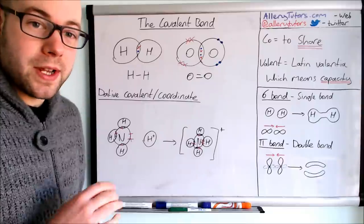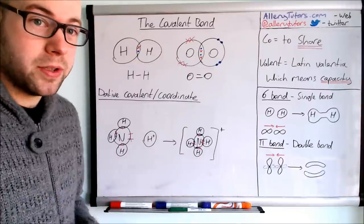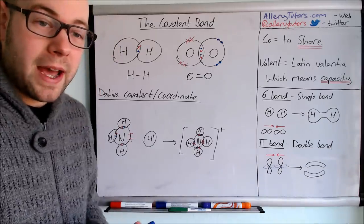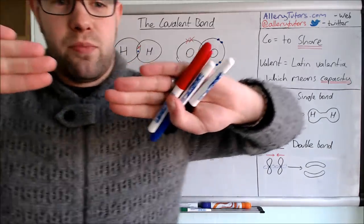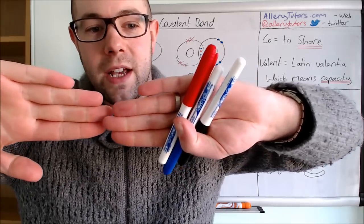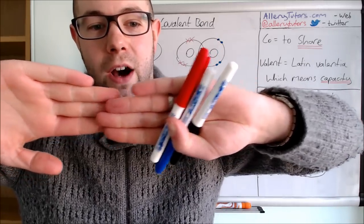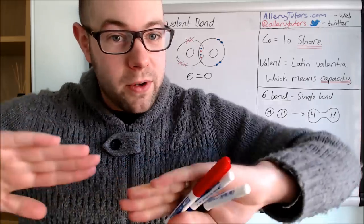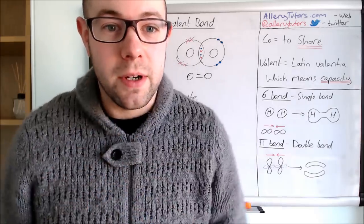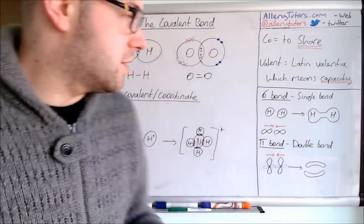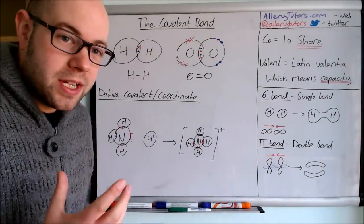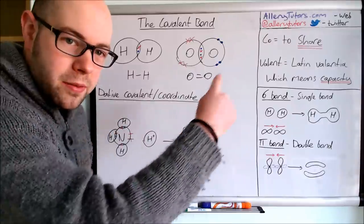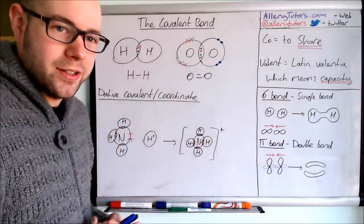That applies to s orbitals, but if we have p orbitals, a sigma bond is where two p orbitals come head to head — they approach and squash together, and that overlap is the actual bond formed. When p orbitals overlap head to head, we call that a sigma bond. Each orbital has an electron, they overlap and share — that's your covalent bond.